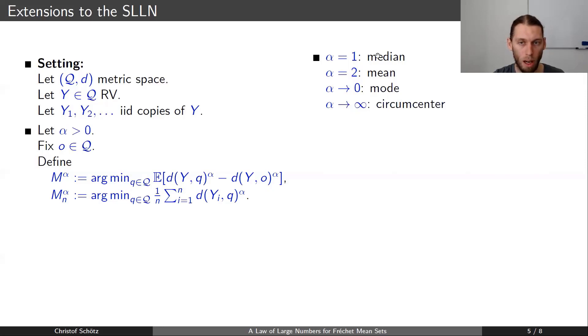And for alpha equals 1, we have something that generalizes the median further. We could also say that alpha to 0 and alpha to infinity have some interpretation. Alpha to 0 will be something like a mode, and alpha to infinity the circumcenter, the center of the support.